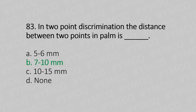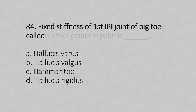Question 84: Fixed stiffness of the first IP joint of the big toe is called — option A: hallux varus; option B: hallux valgus; option C: hammer toe; option D: hallux rigidus. The answer is option D: hallux rigidus.